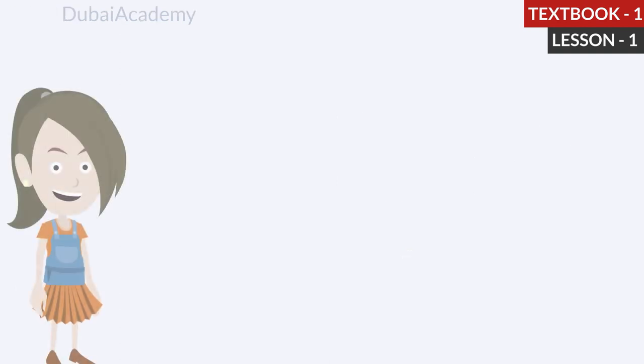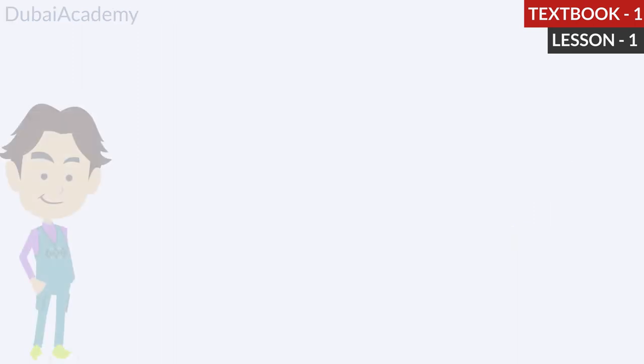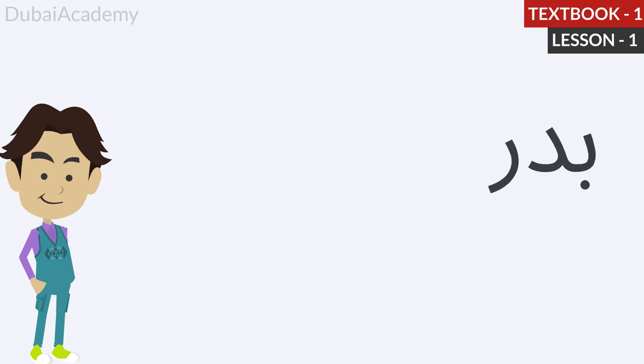The girl dressed in the orange and blue costume is Amal. Let's repeat: Amal. The boy with the purple shirt is Badr. Let's repeat: Badr.